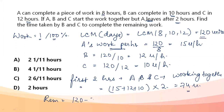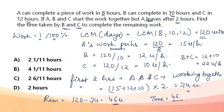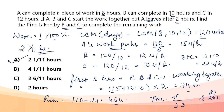The remaining 46 units are done by B and C together. Their combined efficiency is 12 + 10 = 22 units/hour. Time = 46/22 = 2 hours and 2/22 = 2 and 1/11 hours. The total time taken by B and C to complete the remaining work is 2 and 1/11 hours. Answer is option A.